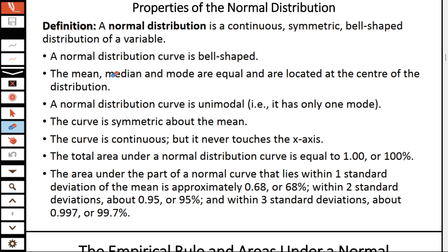Let's go through some properties of the normal distribution. First, the normal distribution curve is bell-shaped. Second, the mean, median and mode are equal and are located at the center of the distribution — for a typical normal distribution, at the center, mean, mode and median will always be equal. Third, the normal distribution curve is unimodal, meaning we have only one mode for the normal distribution.